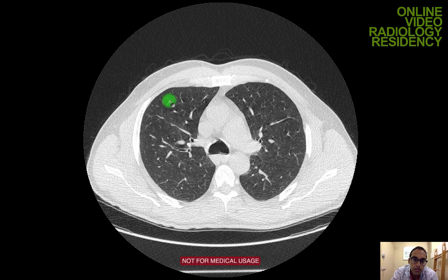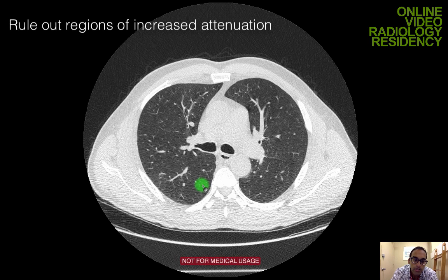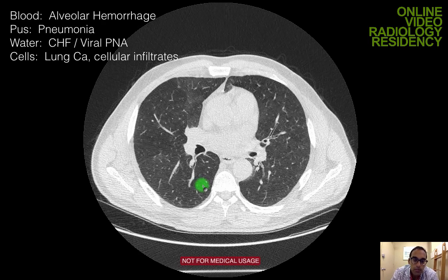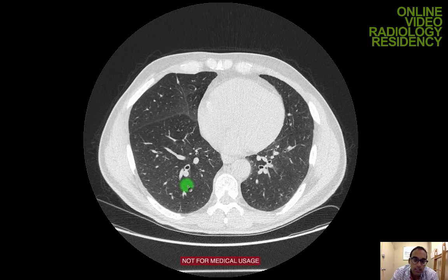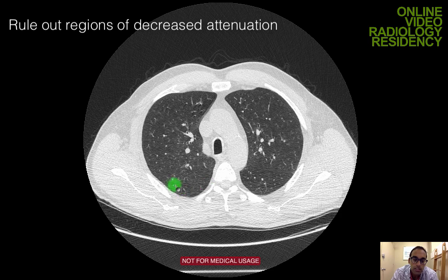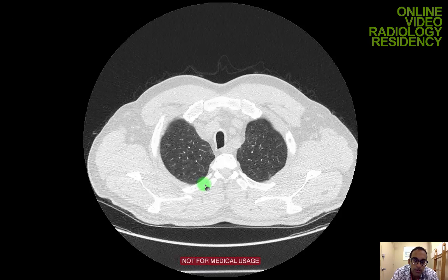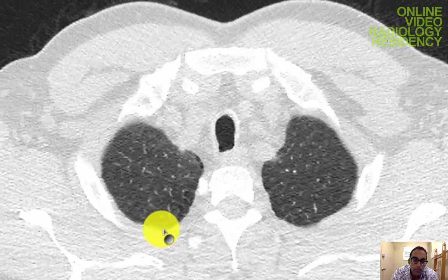I'm trying to exclude increased attenuation of the lung parenchyma — the typical abnormality where the airspace is filled with blood, pus, water, or cells. There are also categories of lung disease with cystic changes or increased lucency. This patient has a very mild form: small cystic changes in the lung periphery, especially at the lung apices in the subpleural lung — that's just mild emphysema.